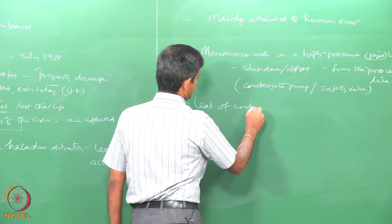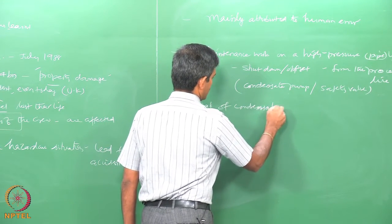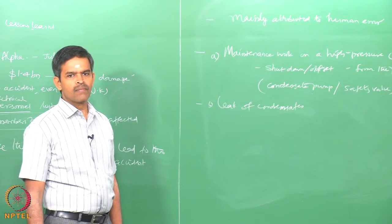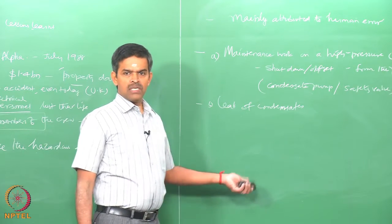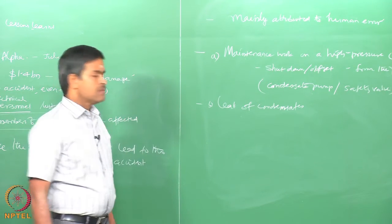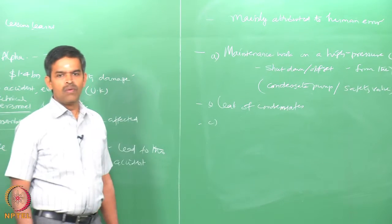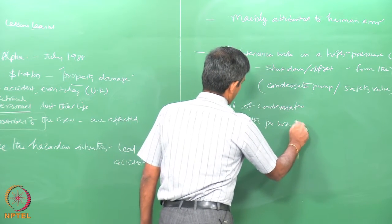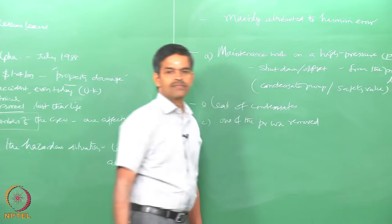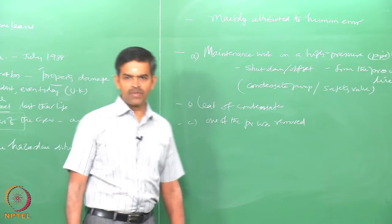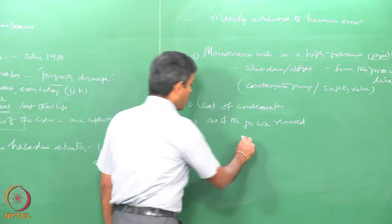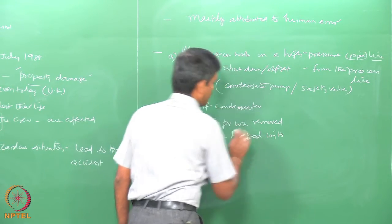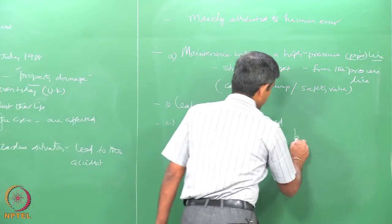Since condensate got leaked, the pressure valve was removed, and the condensate pipe was generally blocked with a blind flange — that is what is generally done.